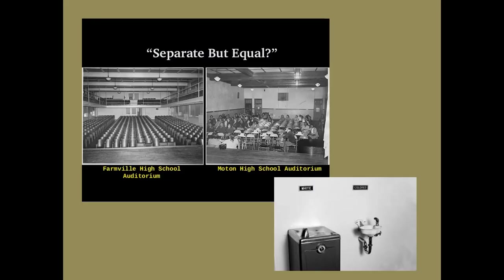Show me an example when it was ever separate and equal. Two high school auditoriums are shown: the white one has bolted chairs, a balcony, a nice stage; the black auditorium has haphazard folding chairs, no balcony. Is that equal? No. This was seen throughout the entire South in the Jim Crow era — it was always separate but never equal.